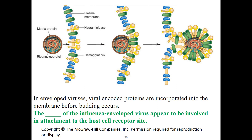Why do we need a new flu vaccine each year? Because hemagglutinin changes and mutates at a very rapid rate. Scientists are guessing, as the virus travels around the world, what strain will come next. They try to make the vaccine so you produce antibodies that attach to hemagglutinin and stop it from attaching to your cells. Attachment is the first step for viral infection, and hemagglutinin attaches to critical receptors — we can't just give a drug to shut those receptors down. Get your flu vaccine.